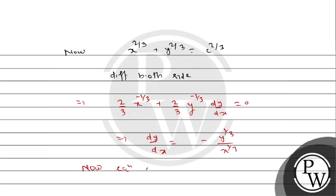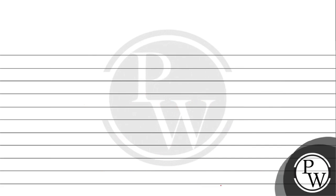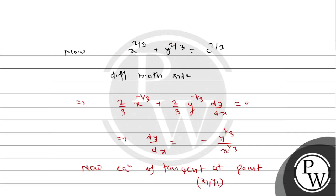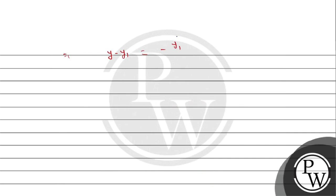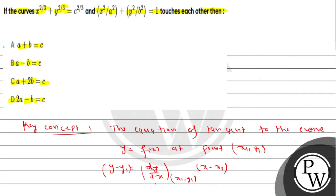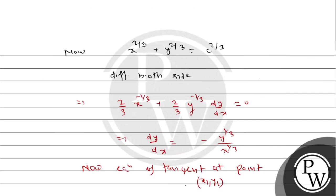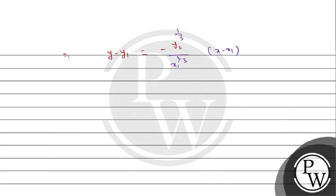Now the equation of tangent at point x1, y1. We have y minus y1 equals minus y1 to the power 1 by 3 divided by x1 to the power 1 by 3, into x minus x1.